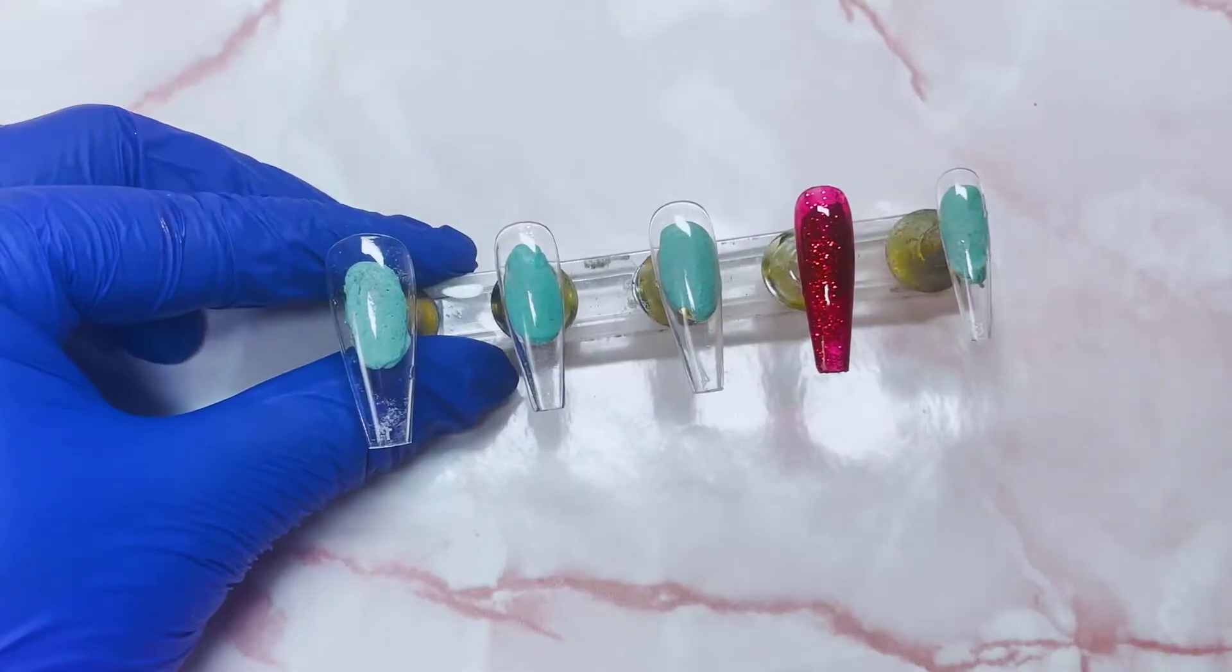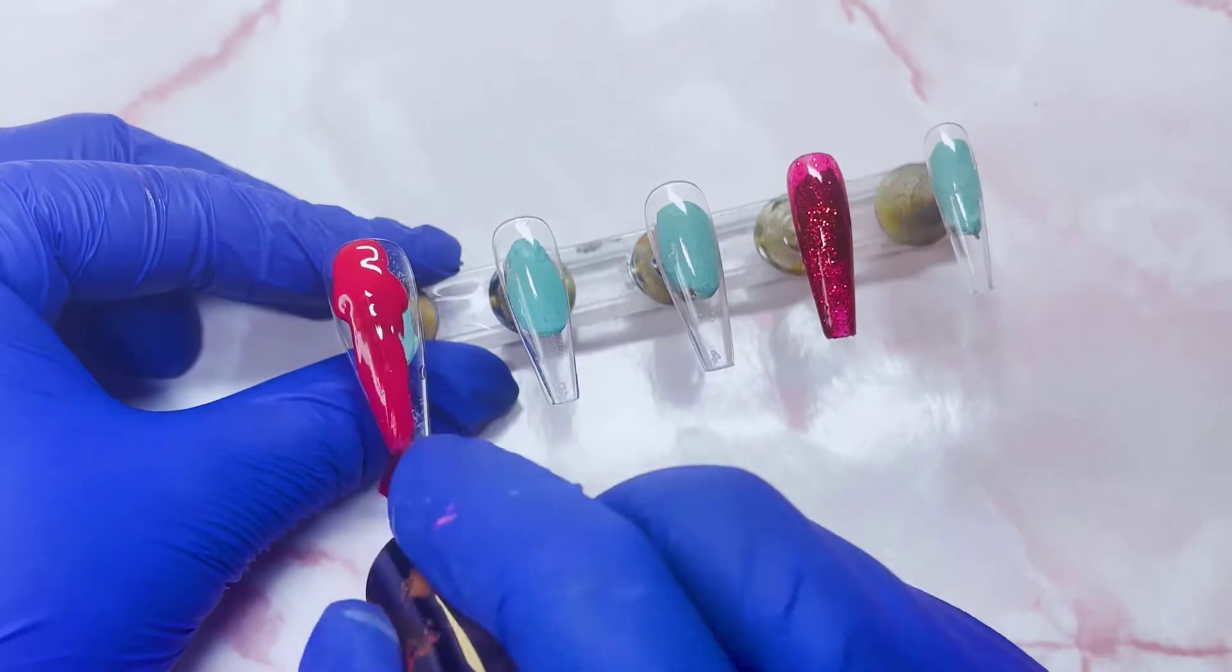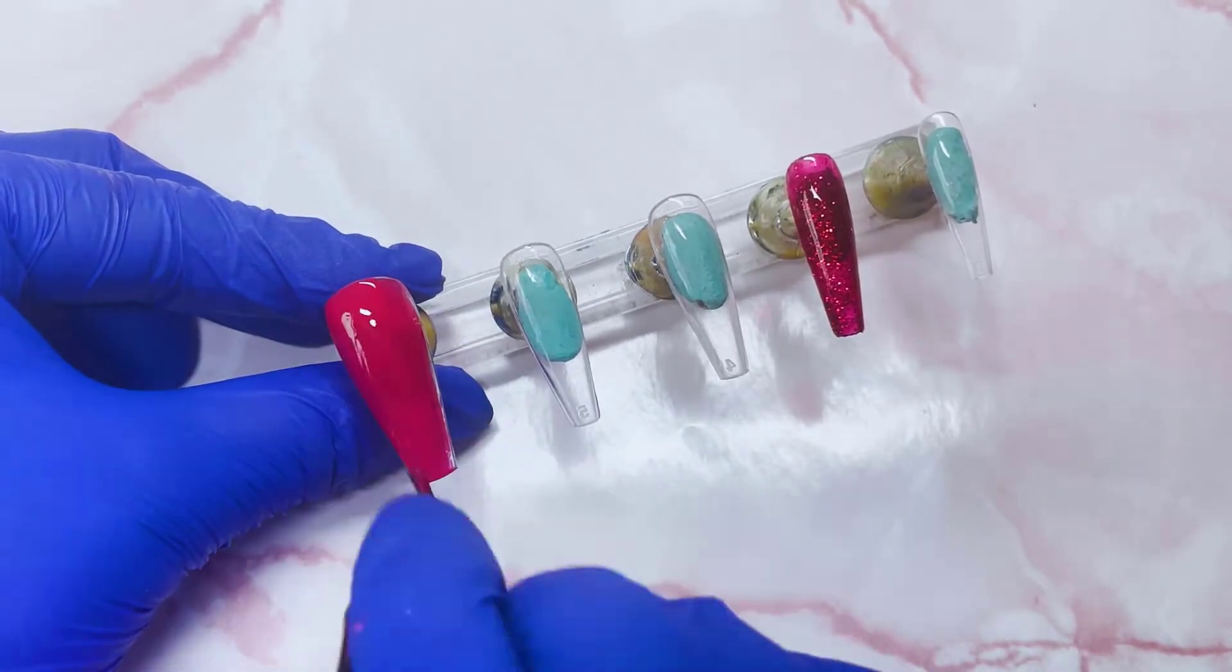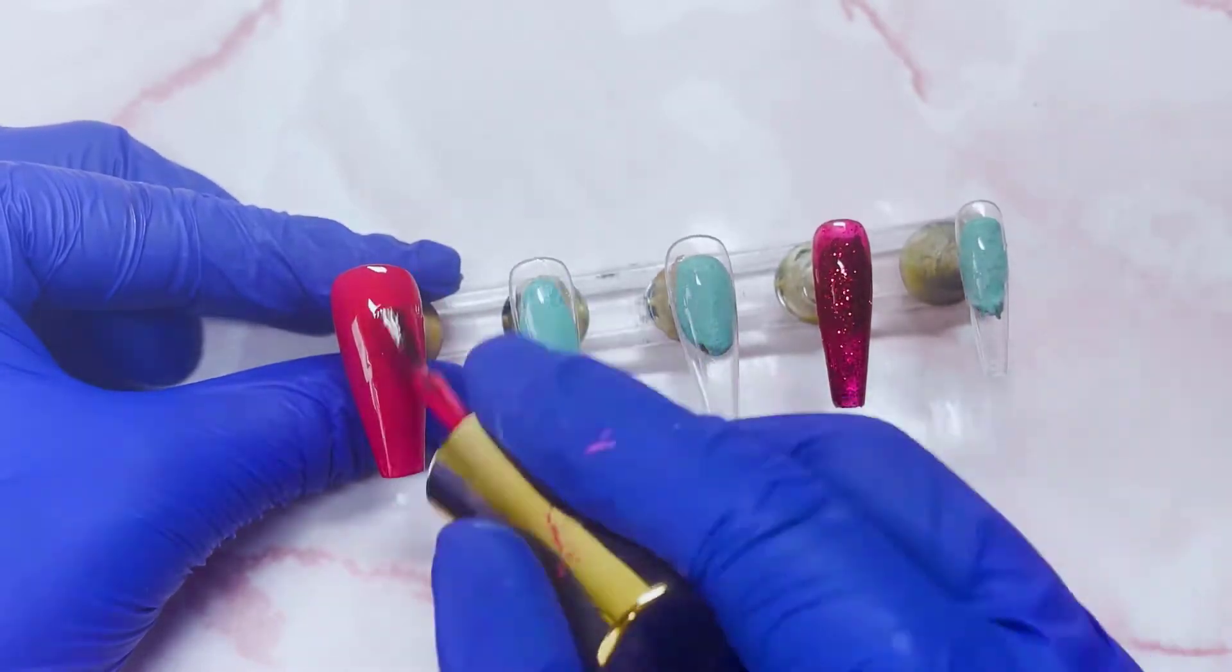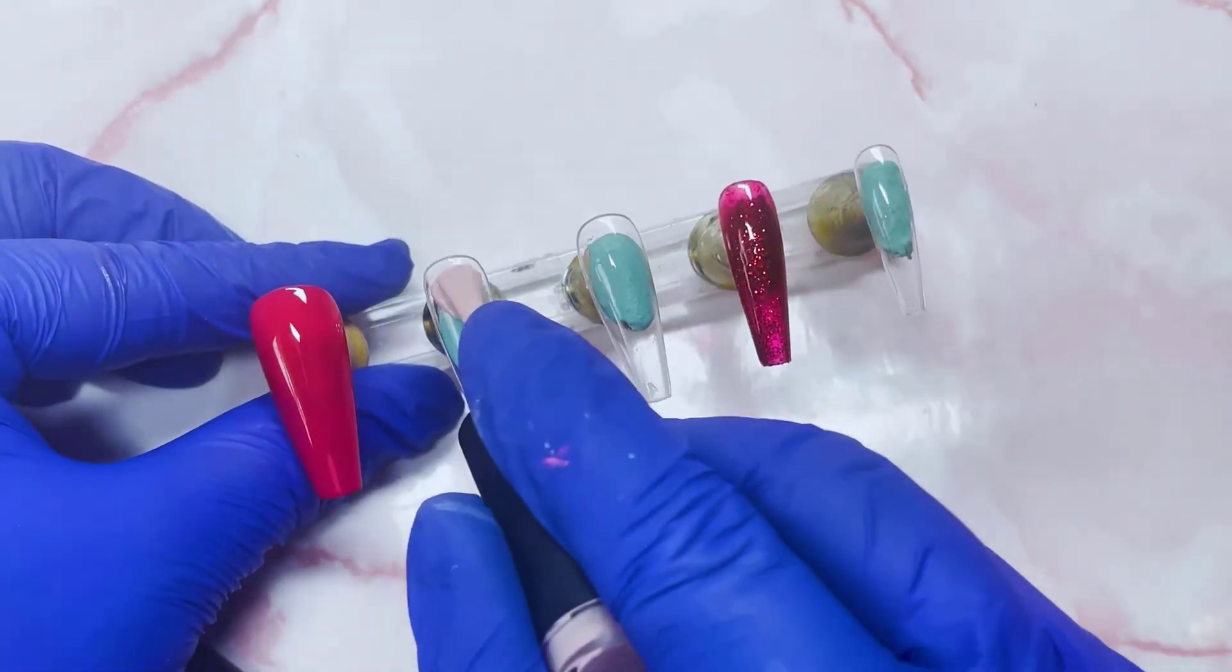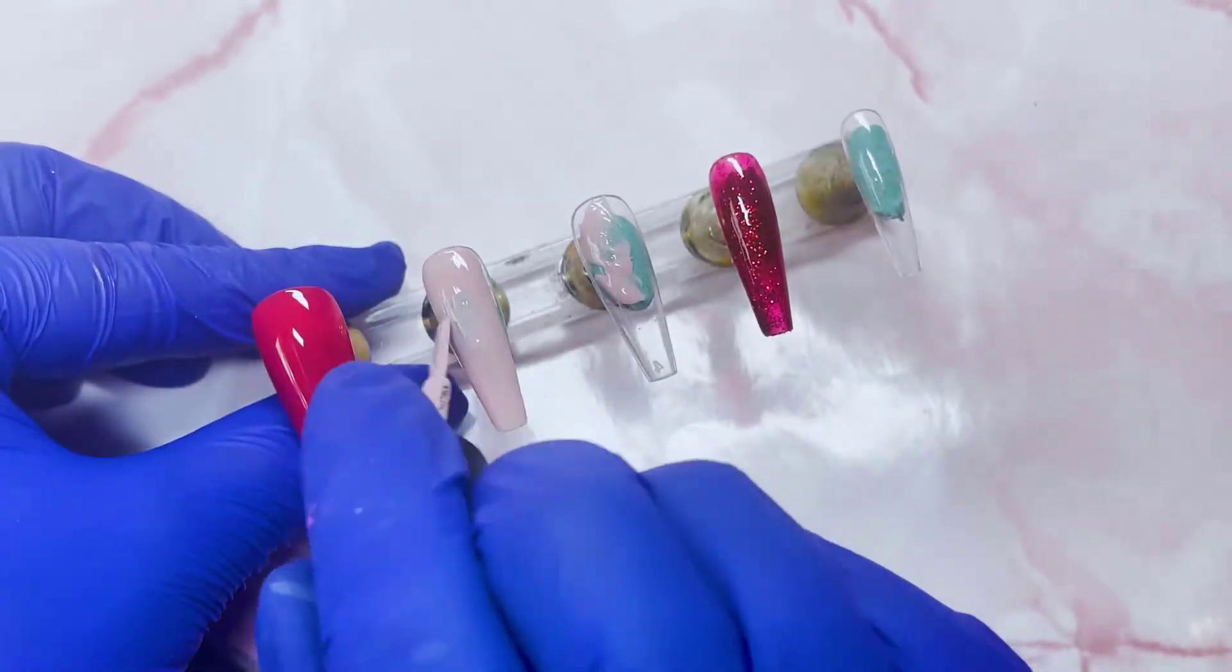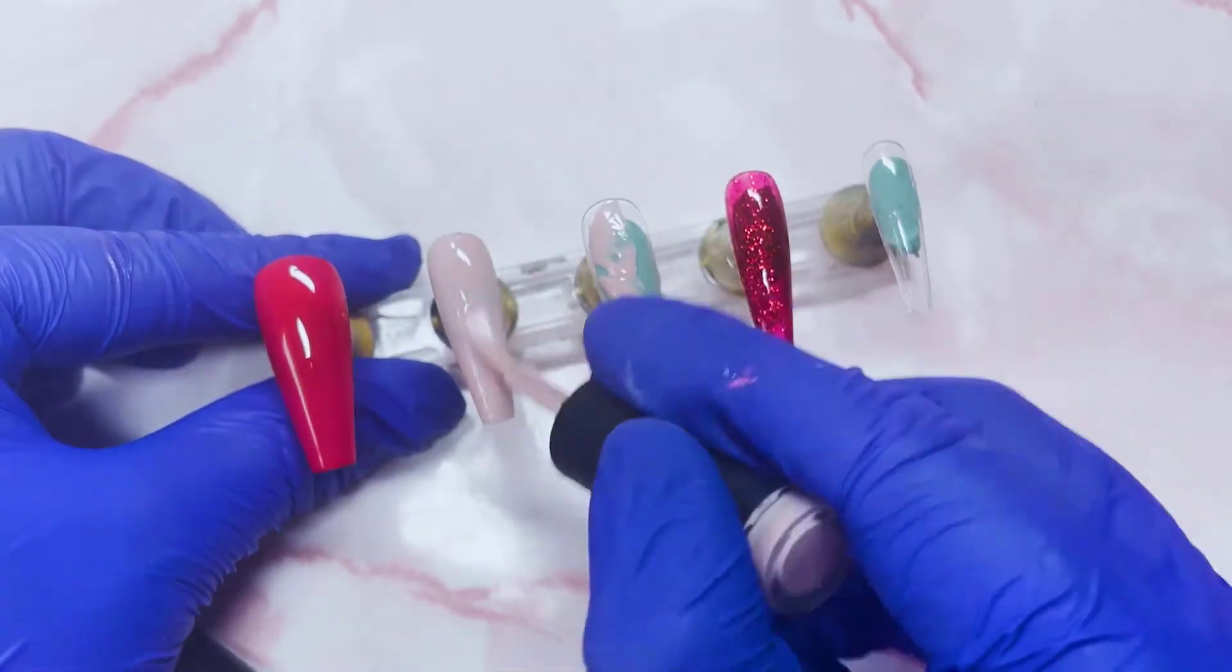So firstly I used a glittery red color from Semilac and I popped that one onto the ring finger. Now I'm going in with a red which I believe is Sexy Red from Venaliza onto the thumb. And then the rest of the fingers are going to be this nude color from Blue Sky, but I can't fully remember the name because they don't actually have names, they have like weird letters and things and it's a very long name. If anyone would like to know I will probably have everything linked down in the description with links straight to the websites where you can buy them.